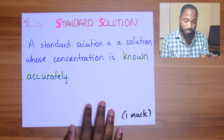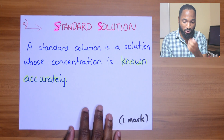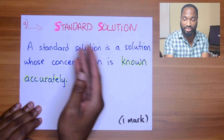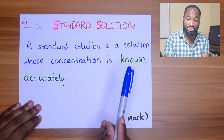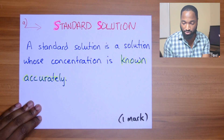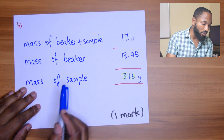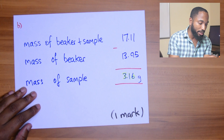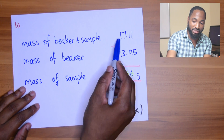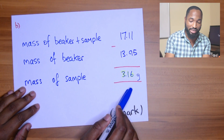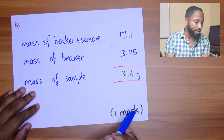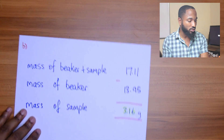The first part of the question asks about standard solution - that's easy, just a definition. A standard solution is a solution whose concentration is accurately known. One mark, move along. Next part: complete the tables, so you'd have already done the question. The mass of beaker and sample, minus mass of beaker - find the mass of the sample, subtract, and you get the mass of the sample. One mark, move along.